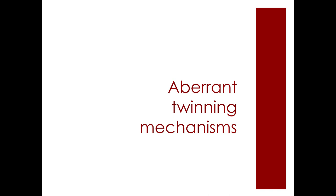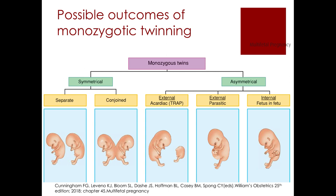Aberrant twinning mechanisms in monozygous twins include two classifications: symmetrical and asymmetrical types. Under symmetrical type, we have separate twinning and conjoined twins. Under asymmetrical type, we have the acardiac type, the parasitic type, and fetus in fetus.